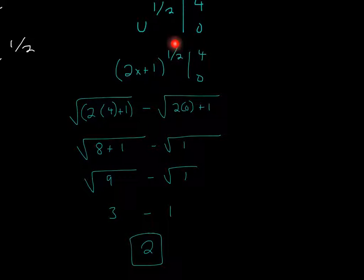Then minus the same thing, except you plug in the second number. 2 times 0 is 0, plus 1 is 1. The square root of 1 is 1, the square root of 9 is 3, so 3 minus 1 equals 2.